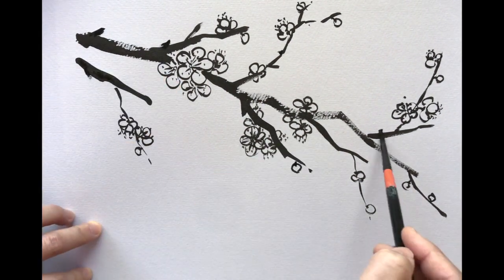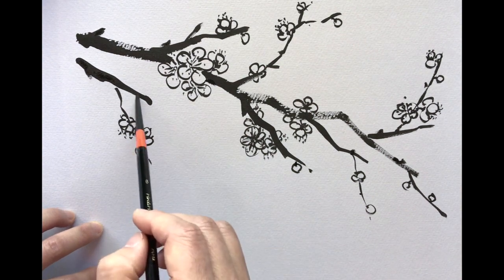Now, add little knobbly things to give the branch some extra roughness like before.